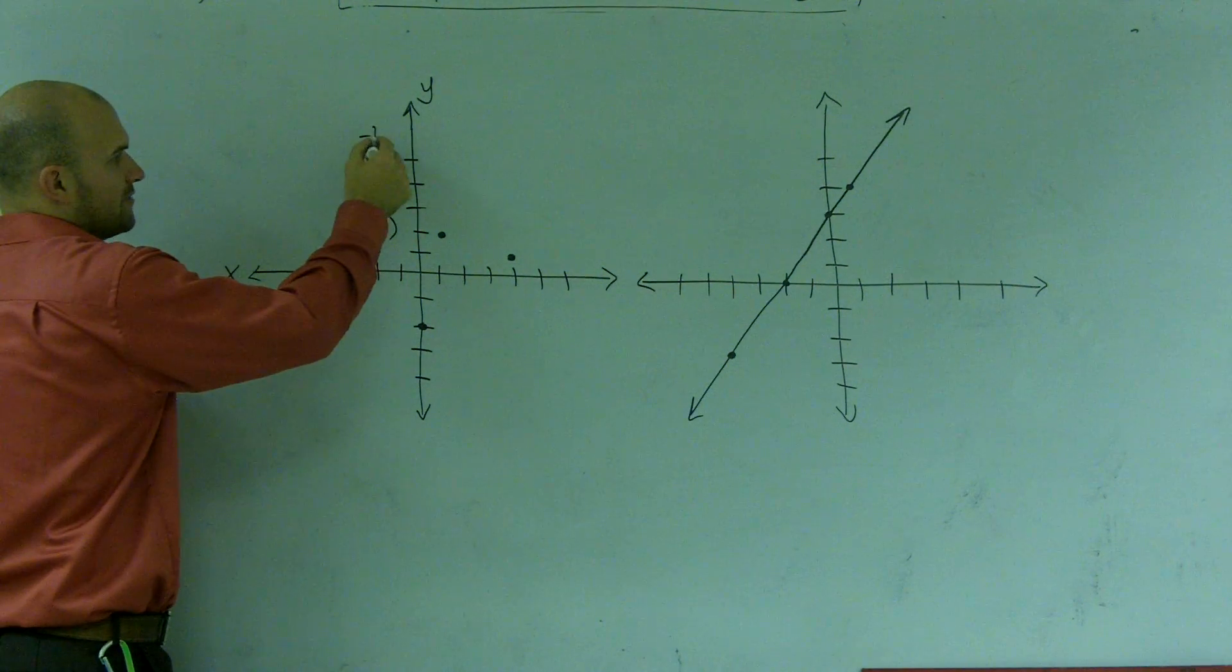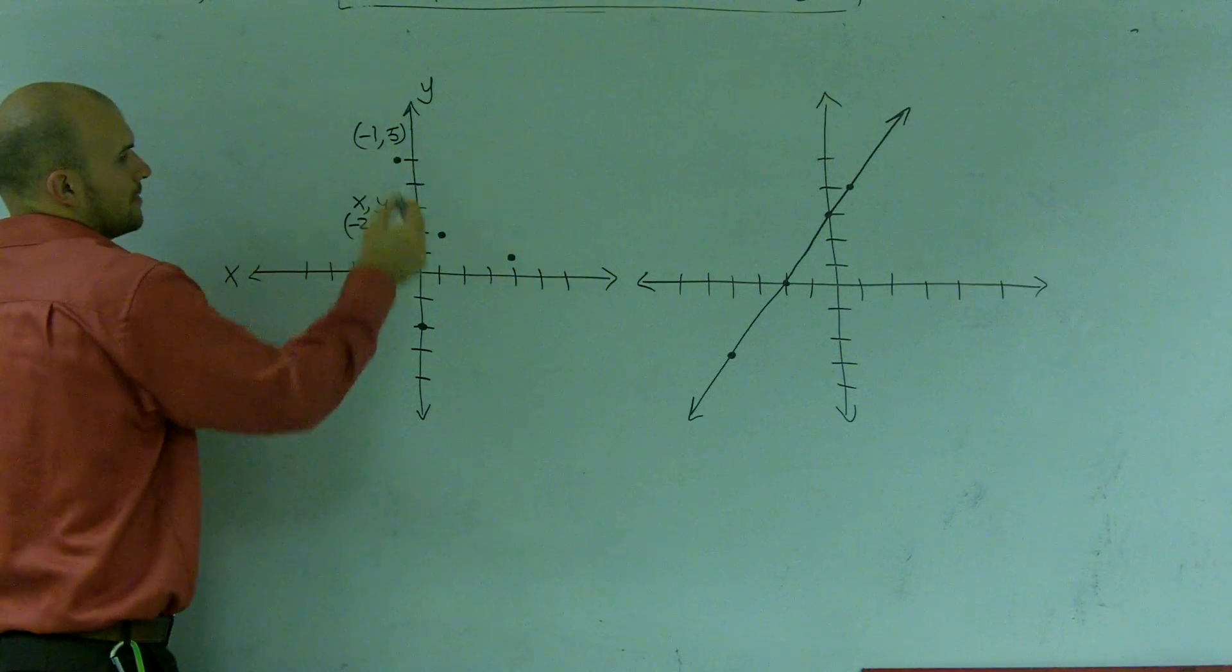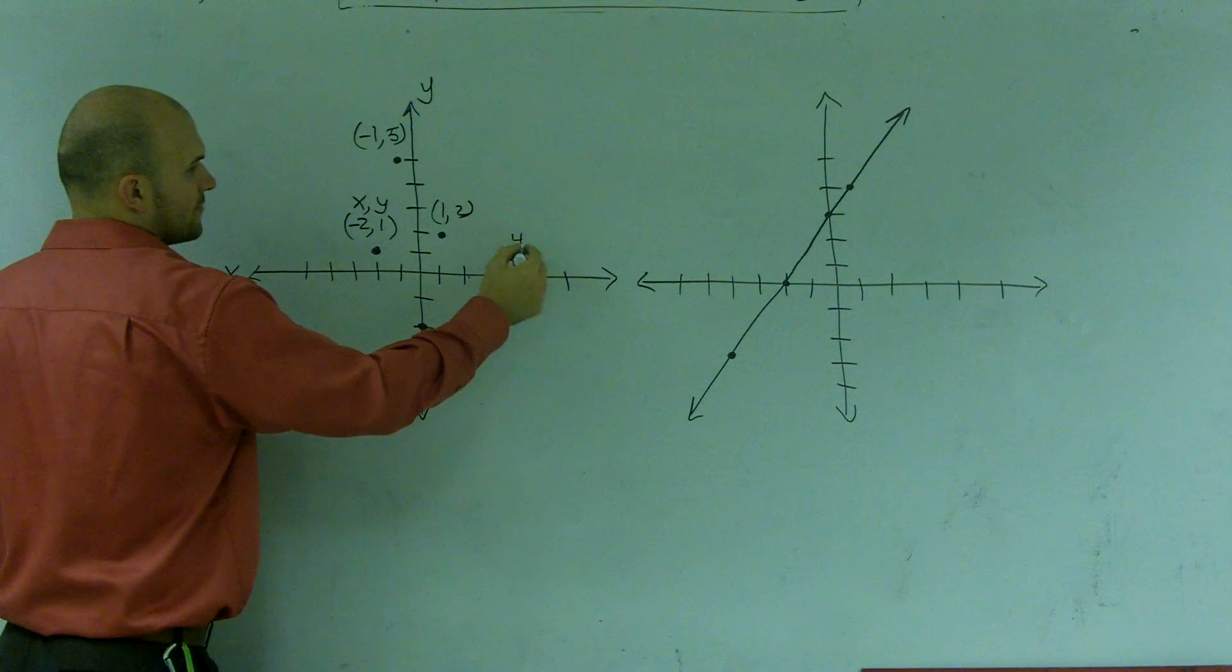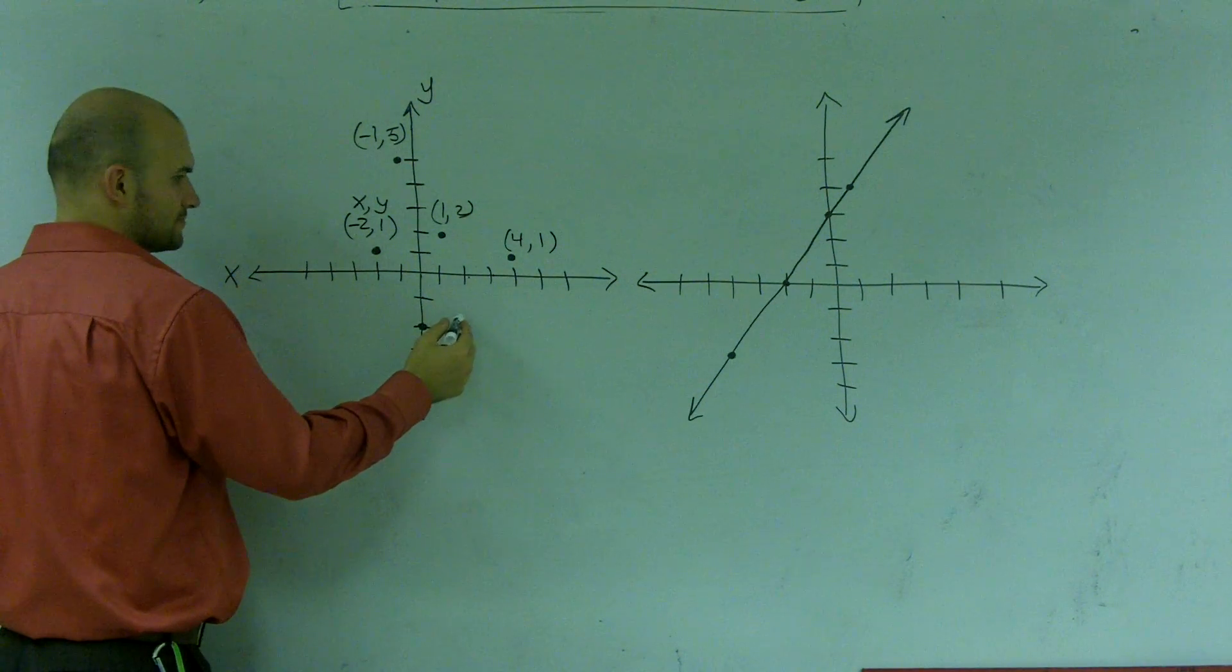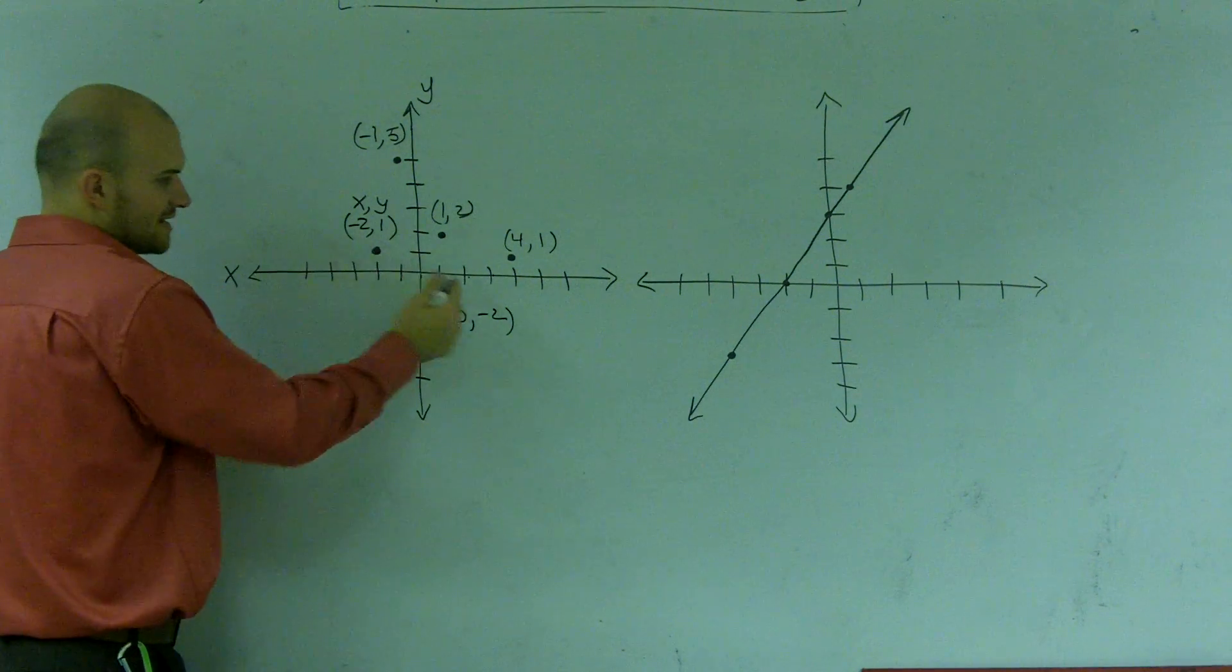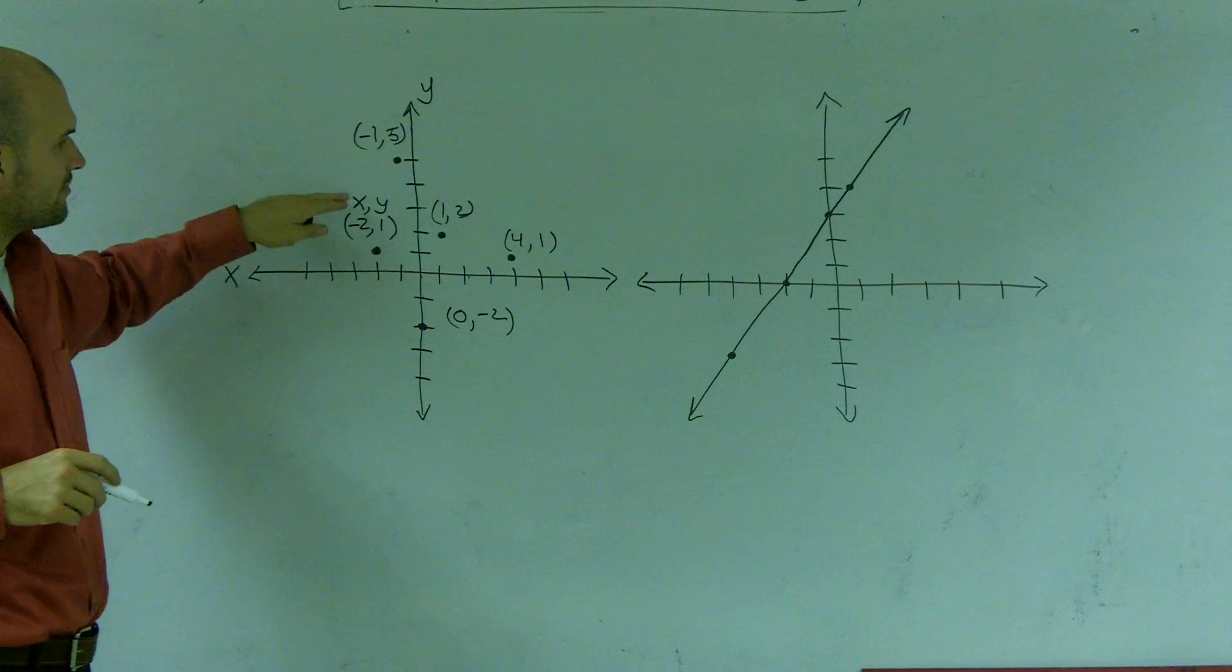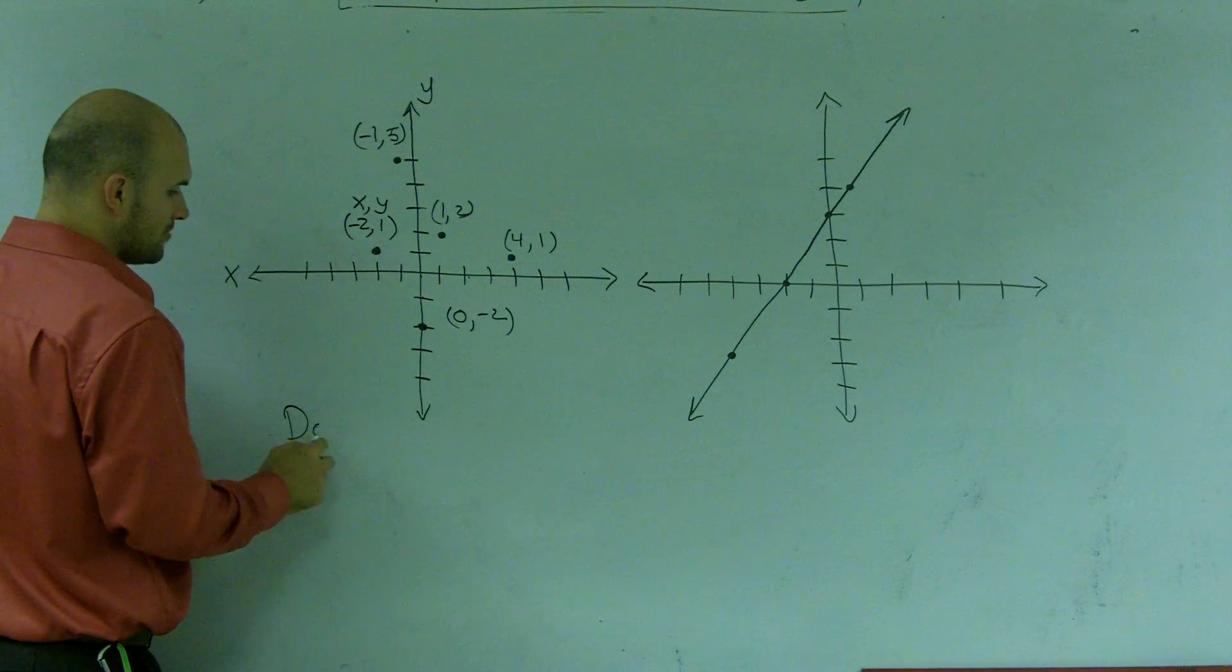Over here, I have a negative one, one, two, three, four, five. Over here, I have one comma two, one, two, three, four, four comma one. And here, it goes down zero, negative two. Okay? Because I didn't go left or right, so that's why x is zero. So if I remember, every coordinate point can be written as x, y. I can write my domain as all of my x values.